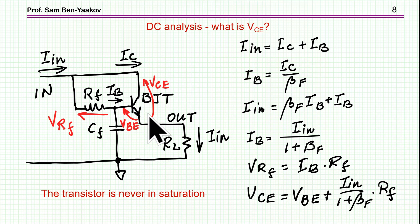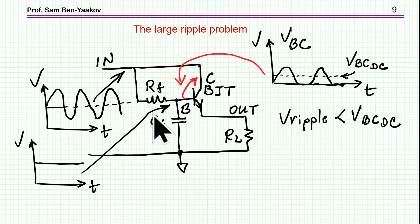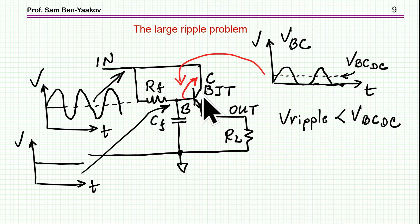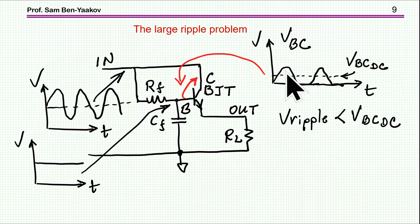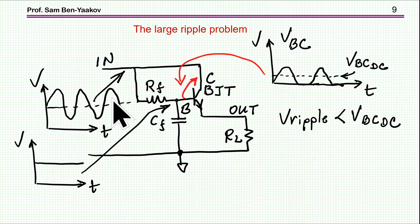Now let's consider what happens if the ripple is high. Since the DC voltage across the transistor in this configuration is very low, and if we have a large ripple component, the collector voltage might go negative — the voltage across the transistor might go negative — and the transistor will go out of the linear mode. So if the ripple is high, we cannot work with this circuit as-is and we have to do something.